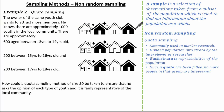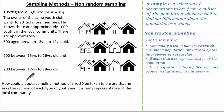Let's look at an example. The owner of the same youth club wants to attract more members. He knows there are approximately 1000 youths in the local community: approximately 600 aged between 13 to 14 years old, 200 aged between 15 and 16 years old, and 200 aged between 17 and 18 years old. The question asks how a quota sampling method of size 50 could be taken to ensure he asks the opinion of each type of youth, fairly representative of the local community. The researcher has divided the population into groups by age.